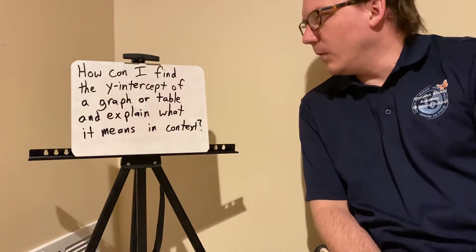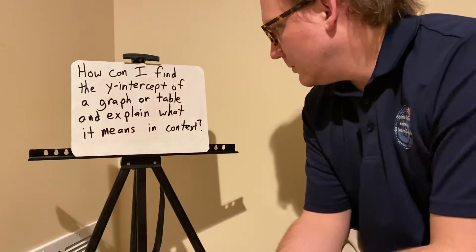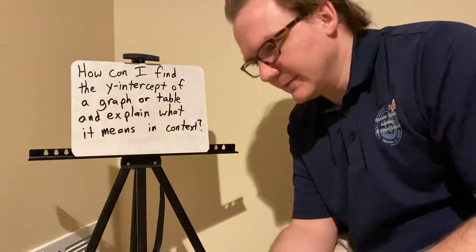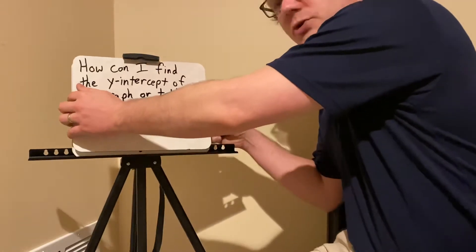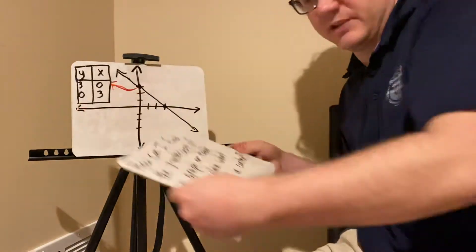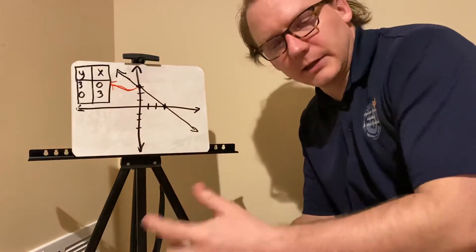How can I find the y-intercept of a graph or table and explain what it means in context? The y-intercept, right? So we talk about proportional relationships where we have y equals mx. Well in here we're going to add on another part to that.